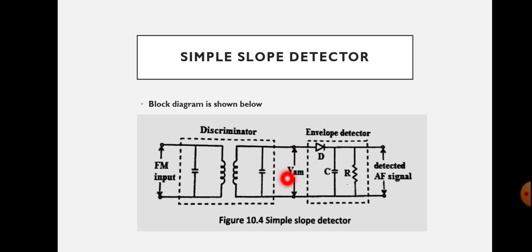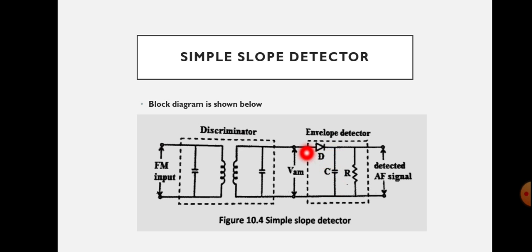Once the AM signal is obtained at the output of the discriminator, AM can be detected using an envelope detector — here a diode detector is used as the envelope detector. During the positive cycle of the amplitude modulated signal the diode is forward biased, so the capacitor starts charging. During the negative cycle of the carrier the diode is reverse biased, charging stops and the capacitor starts discharging, but it cannot completely discharge because the next positive cycle arrives before that. As a result, continuous charging occurs. A filter circuit at the output removes the ripples, and the detected information signal is obtained at the output.